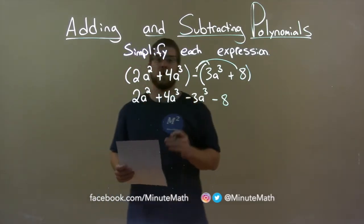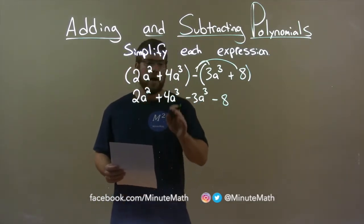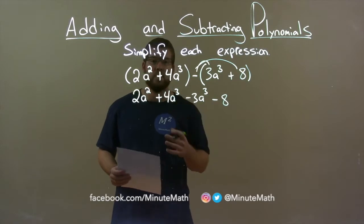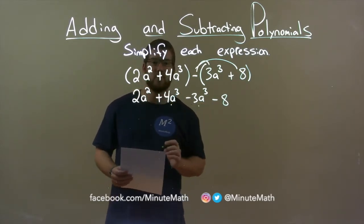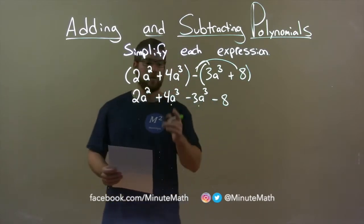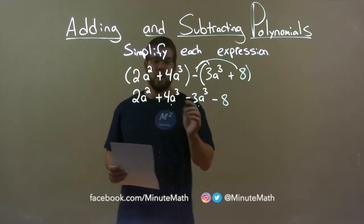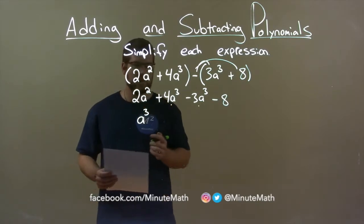So now we want to combine our like terms. I see we have a to the third, that's our highest degree, so let's deal with that first. We have 4a to the third and minus 3a to the third. Together, 4 minus 3 is 1, so we just have a to the third, or 1a to the third.